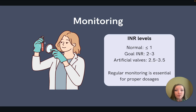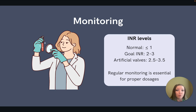The INR is a lab value that is important to know whether you're taking the AANP or the ANCC exam. A normal INR for someone who is not being treated with warfarin is around 1 or less. For someone who is being treated with warfarin, the goal therapeutic range is typically between 2 and 3. If a patient has an artificial valve, the goal would be slightly higher at 2.5 to 3.5.